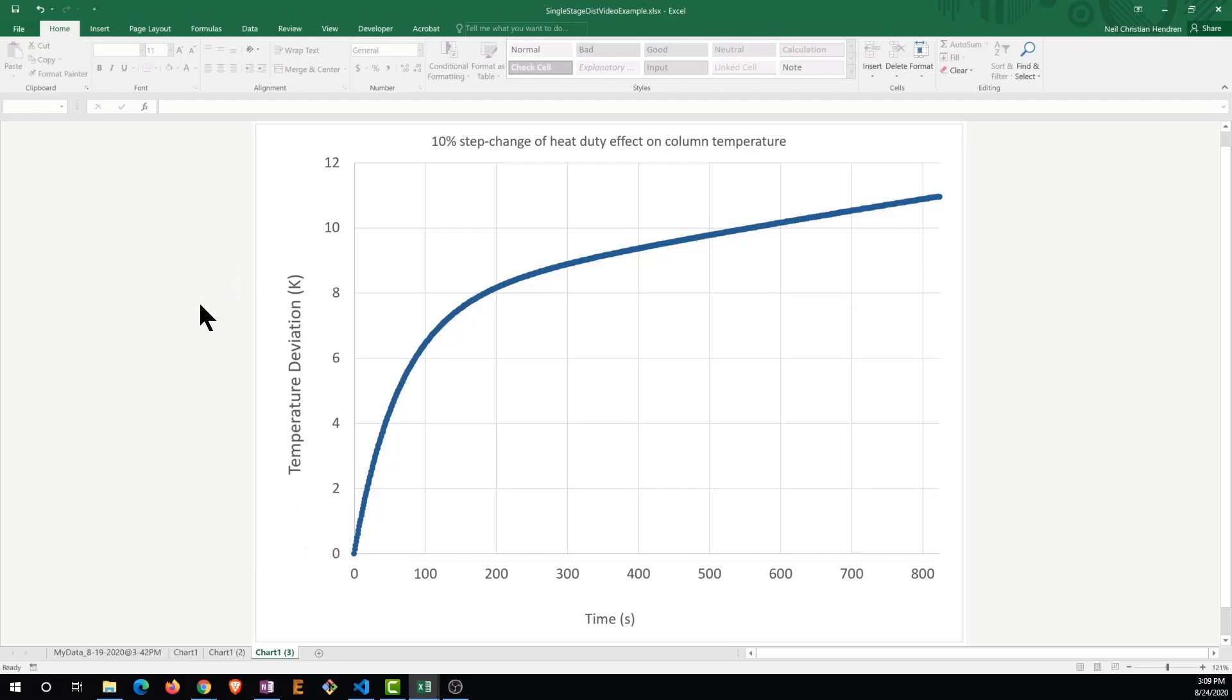Finally we will perform least squares regression to find the process gain and time constant as well as the corresponding 95% confidence intervals. Least squares regression is beyond the scope of this video but there are resources on learnchemy.com to help you with this process.